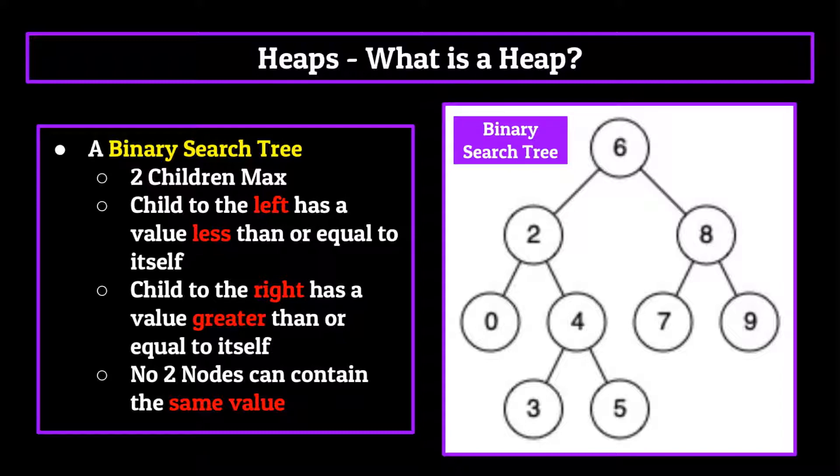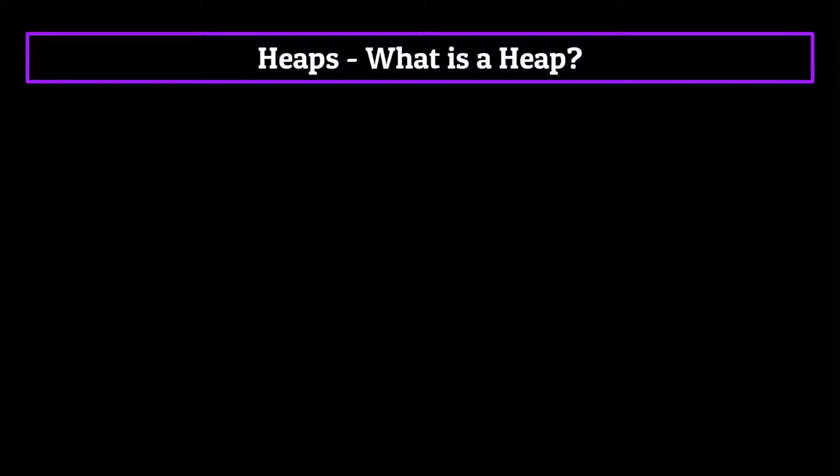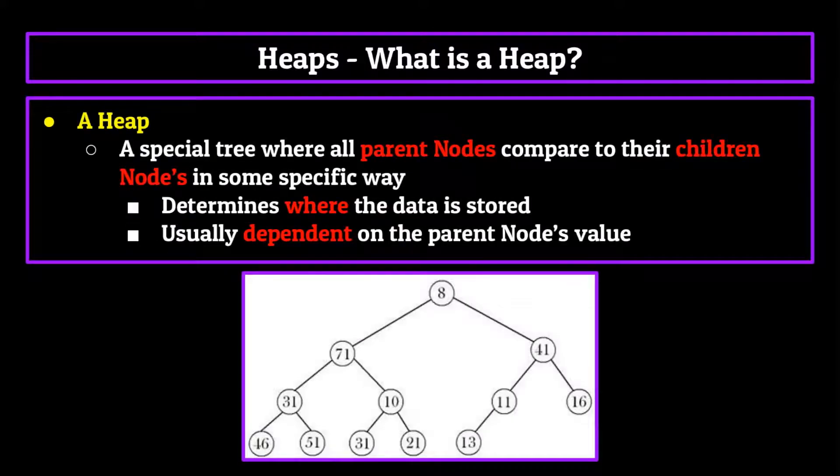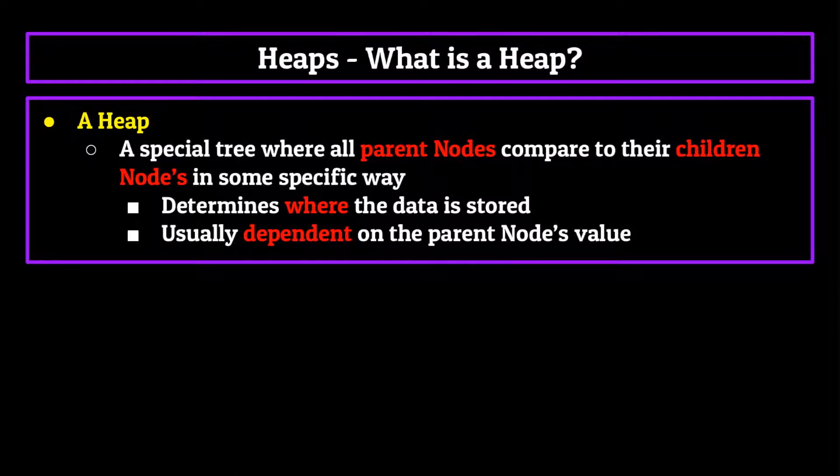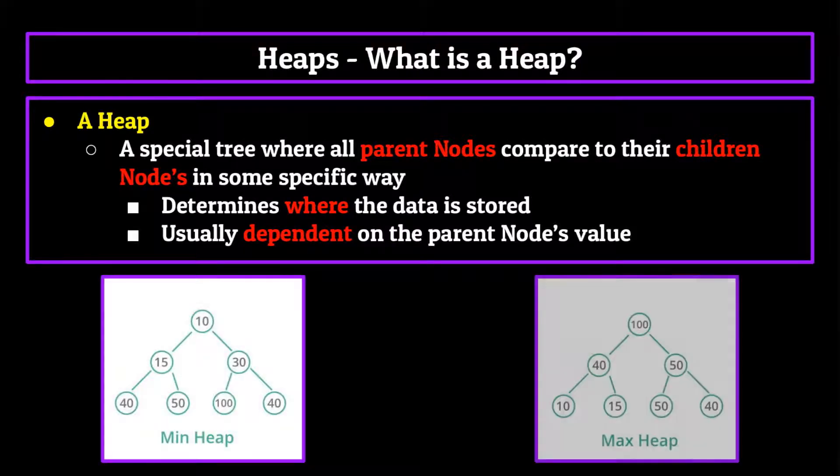Well, a heap is sort of like this, but a little bit different. More specifically, by definition, a heap is a special tree where all parent nodes compare to their child nodes in some specific way. This specific way determines where the data is stored, and is usually dependent on the parent node's value. There are two different methodologies generally used in computer science to make heaps, and they come together to form what are known as min heaps and max heaps.